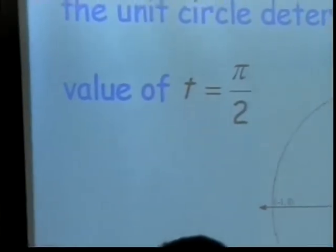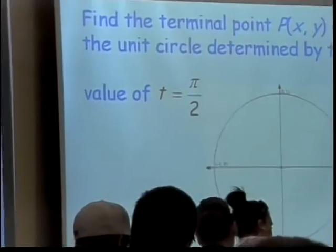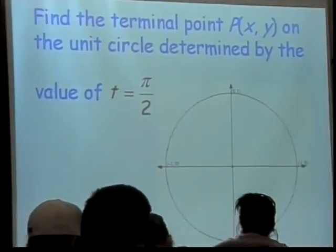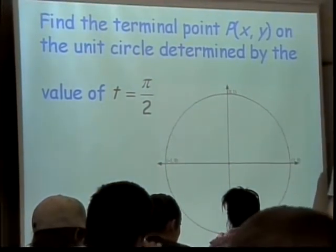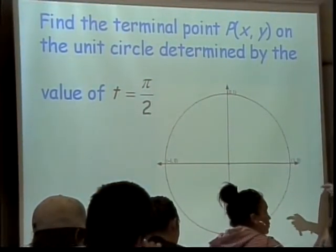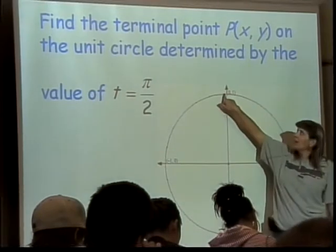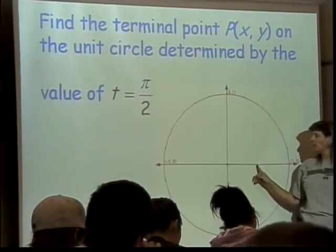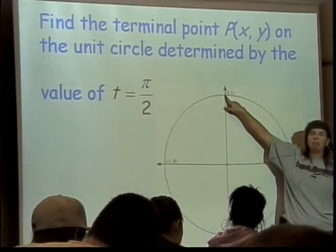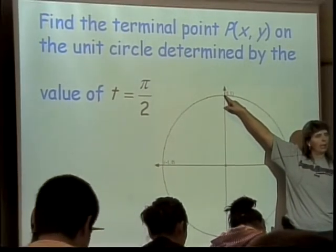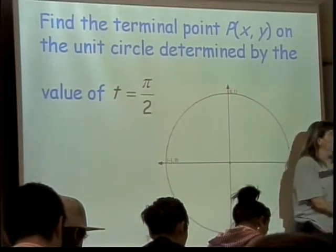Where is pi over 2 on my unit circle? Or, at 0, 1. Pi over 2? It's up here. It's the angle that starts here and goes a quarter of the way around the circle. And it has coordinates 0 and 1.